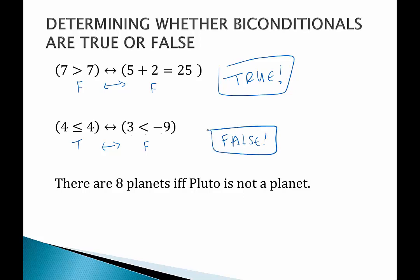And our last example. There are 8 planets if and only if Pluto is not a planet. Poor Pluto. There are 8 planets currently in 2020. That is true. Pluto is currently not a planet. It's a dwarf planet. That is true. So the biconditional is true. This has been a video on biconditional statements. Thank you.